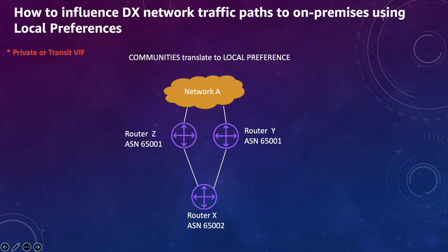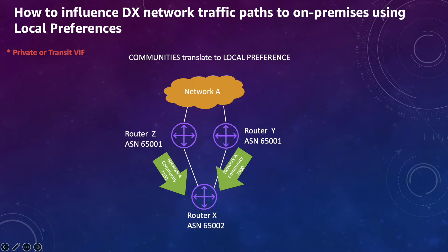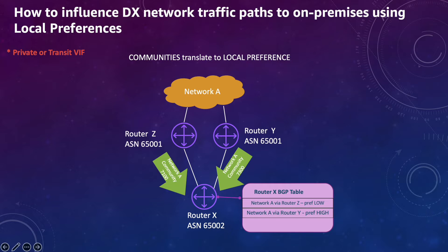The second example shows how you can use local preferences or BGP communities. I have the same setup with network A and router X and two paths via router Z and router Y. If I want to make router Y the primary path, I can announce a higher BGP community value of 7300 for that router, and the lower BGP community 7100 for the other. That gives router Y a higher preference, making it the primary path.